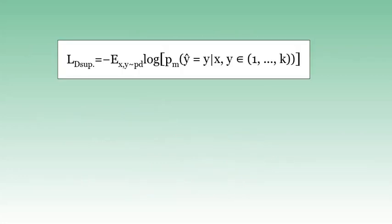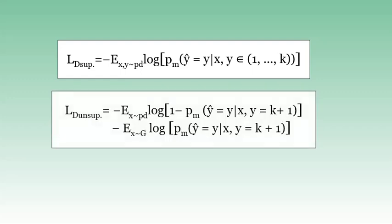Mathematically, the discriminator supervised loss can be represented by the equation where x and y are considered real, and the term inside the log function represents the probability of x being classified into one of the real target classes. However, the authors have not considered the supervised loss when a real example gets classified as fake by the discriminator. The unsupervised loss equation's initial term measures the error when real unlabeled examples are misclassified as the fake class, and the latter term measures the error when the discriminator doesn't recognize fake input. The total loss is the sum of these two losses.